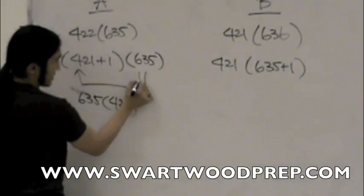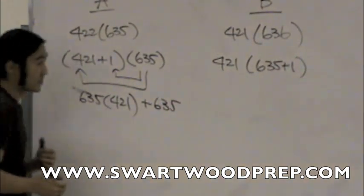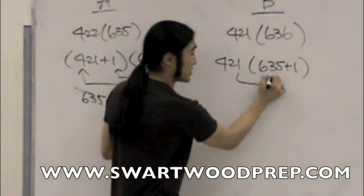421, my bad. And 635 times 1, obviously pretty straightforward. Let's run the same computation this way.